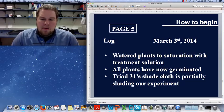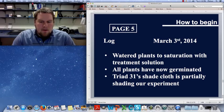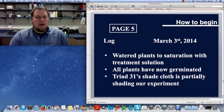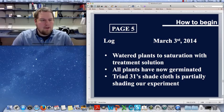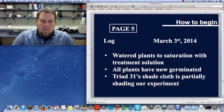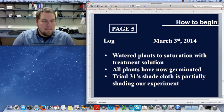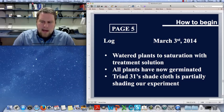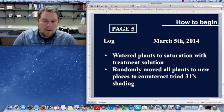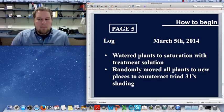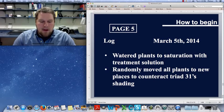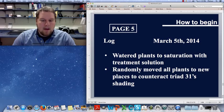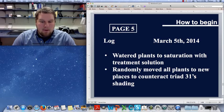So I go back in on March 3rd. I water again my plants with my treatment solution, and I notice that now all the plants have germinated. There are seedlings in each pot. But I notice also that the triad adjacent to me, triad 31, their shade cloth is partially shading my experiment. And I'm a little concerned about that because not all of my plants are receiving the same amount of light now. So I kind of went home that night and I thought about what I could do. And I came back two mornings from then, and March 5th I watered my plants. And then I randomly moved my plants to new places because I knew that the shade cloth would introduce another factor in my experiment, so I wanted to randomize my plants in space to counteract that shading that my neighbor triad was doing.